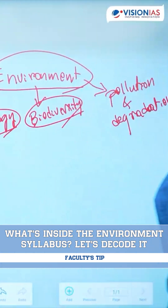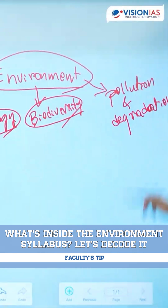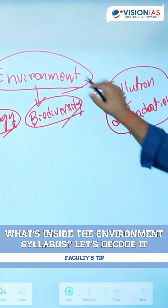Climate change, global warming, ocean acidification, ozone depletion, sea level rise — everything. All the changes which happen, that is pollution and degradation.